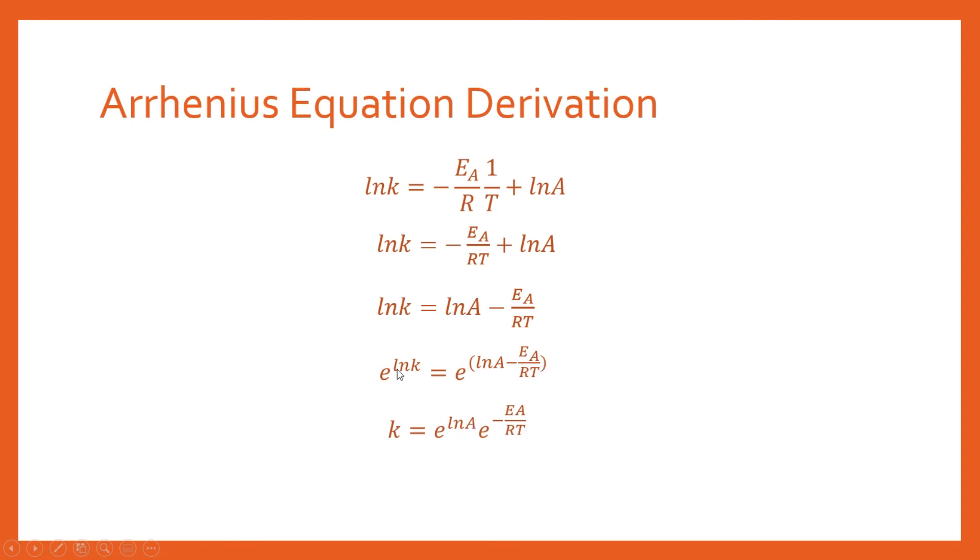In exactly the same way as e to the ln K was K, e to the ln A is simply going to be A. And there we have the other form of the Arrhenius equation.